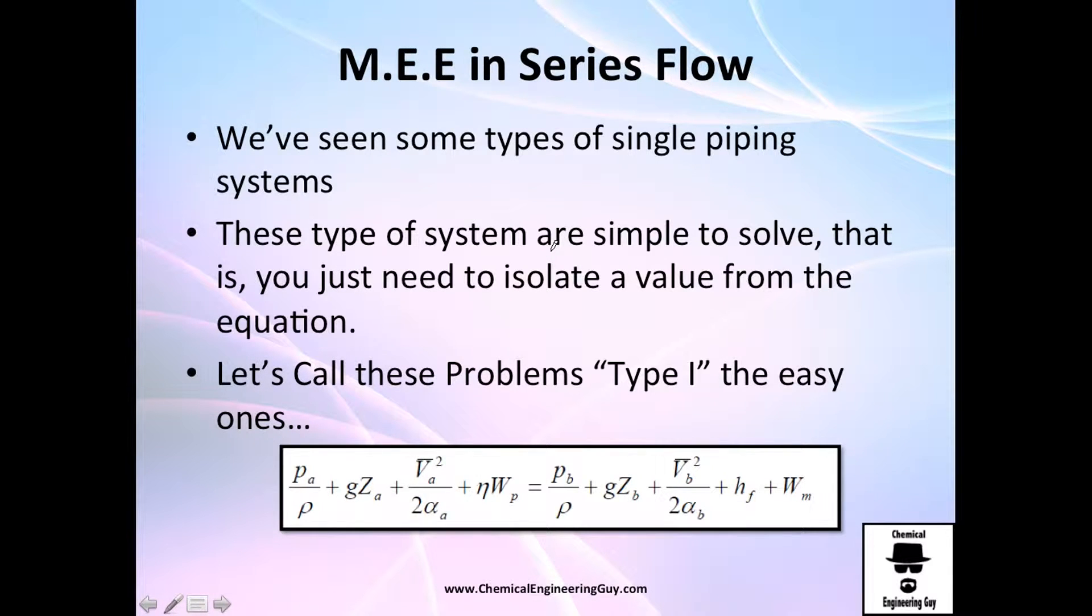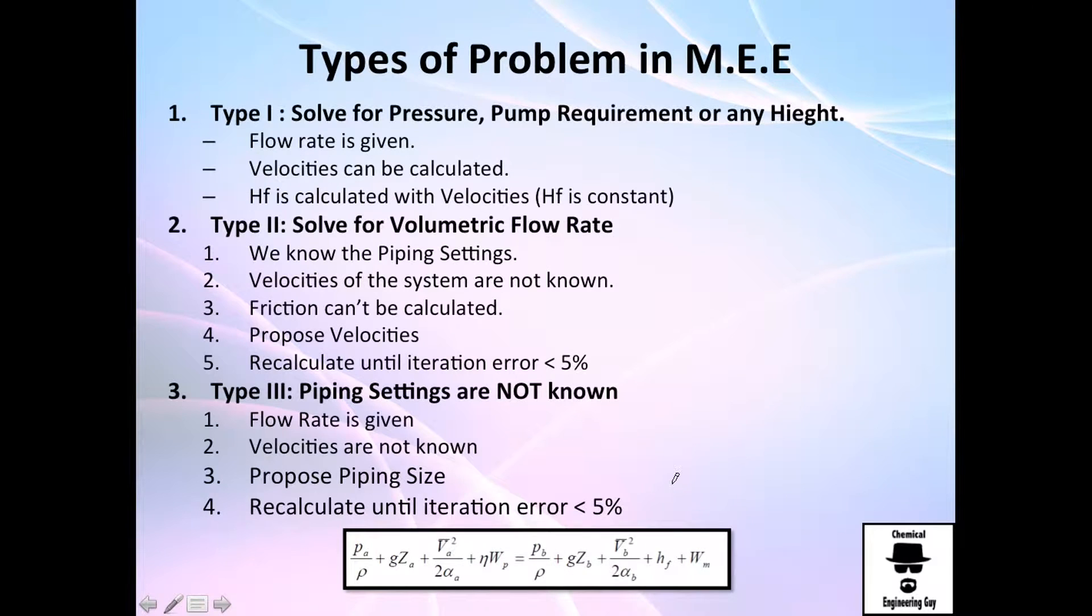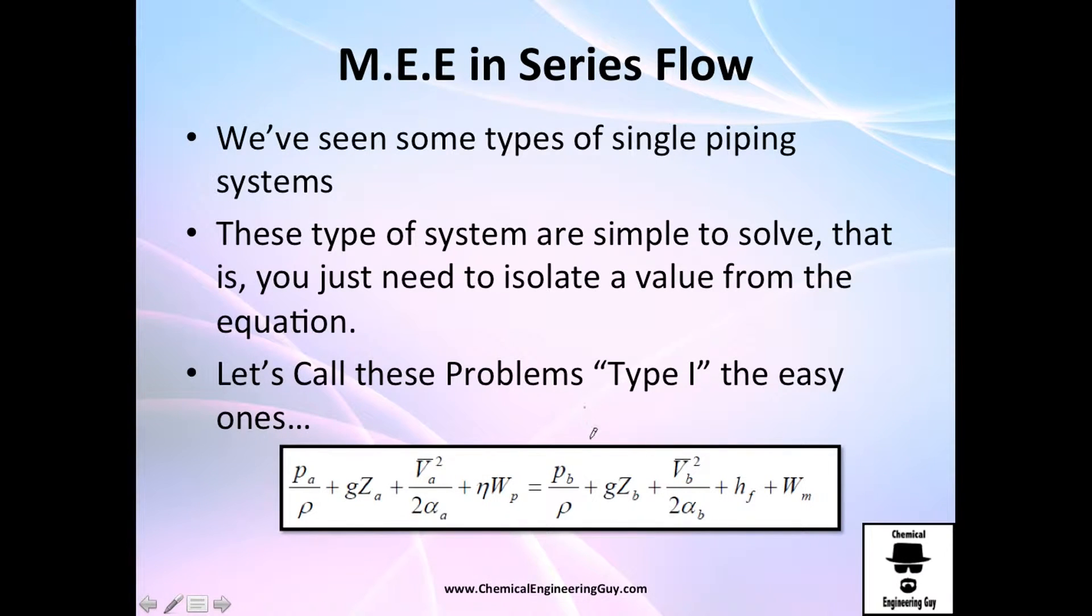And from this equation, if we don't have velocities, we cannot calculate this and we cannot calculate this and we cannot calculate this. So how can we do that? Friction cannot be calculated directly. And the only approach will be, let's guess random velocity. So we propose a volumetric flow rate, with that volumetric flow rate, calculate the velocity head and the loss of energy.